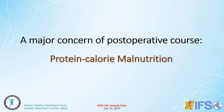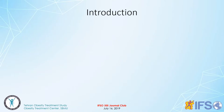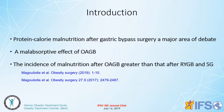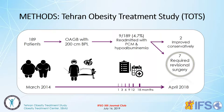The major concern of the postoperative course in OAGB/MGB is protein calorie malnutrition. This is the only significant problem in OAGB/MGB. As an introduction, protein calorie malnutrition after gastric bypass is a major area of debate. Some studies show OAGB is more malabsorptive than RYGB, and the incidence of malnutrition after OAGB is greater than after RYGB and sleeve in the majority of publications.